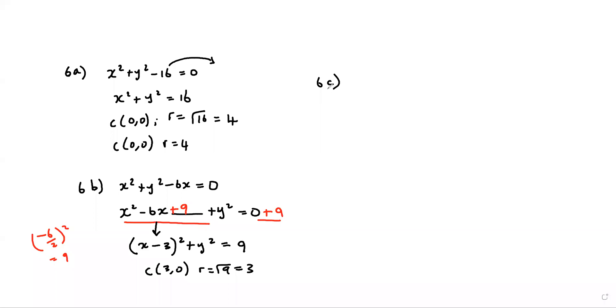Okay, so question 6c: we've got x squared plus y squared minus 4x plus 2y minus 4 equals zero.